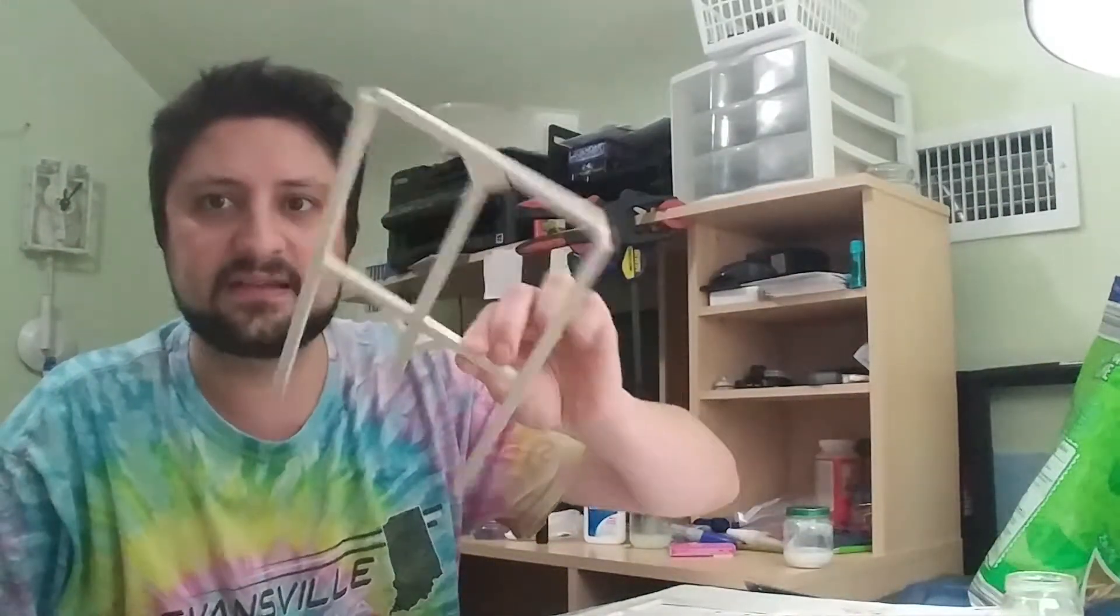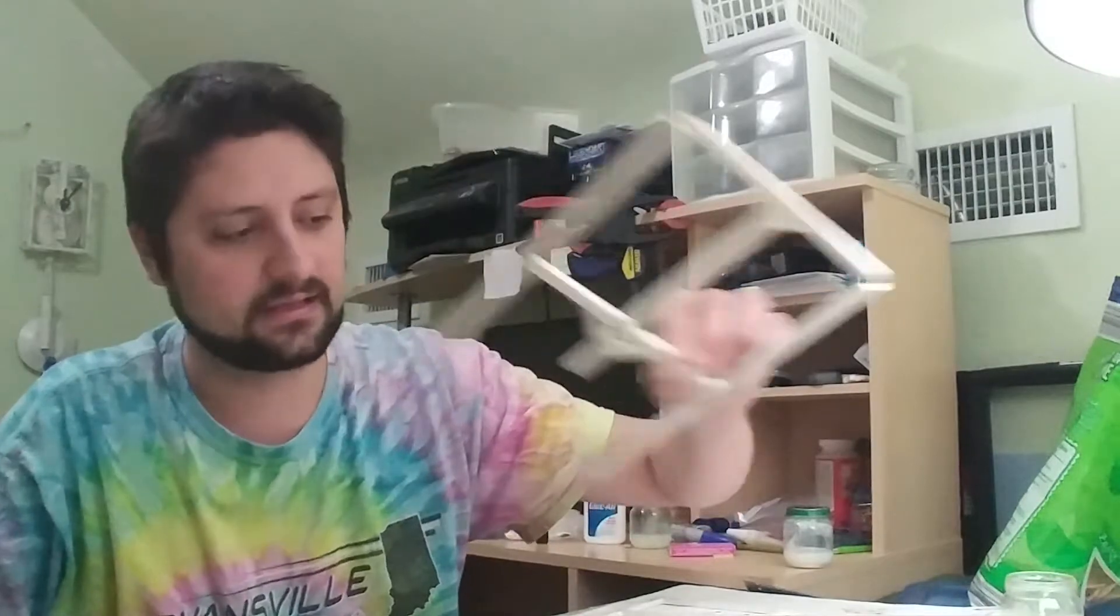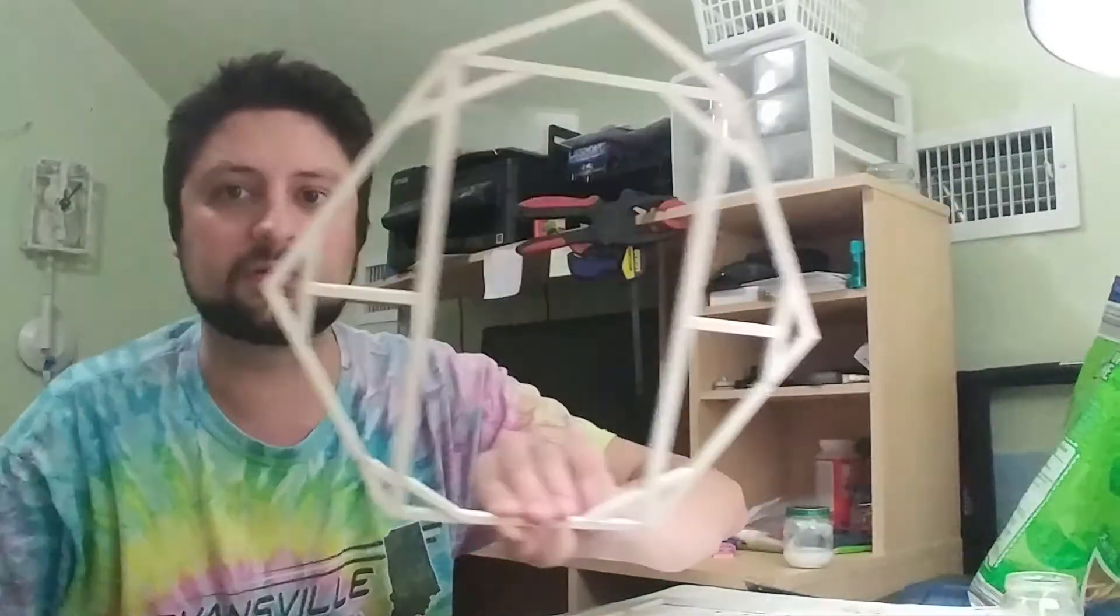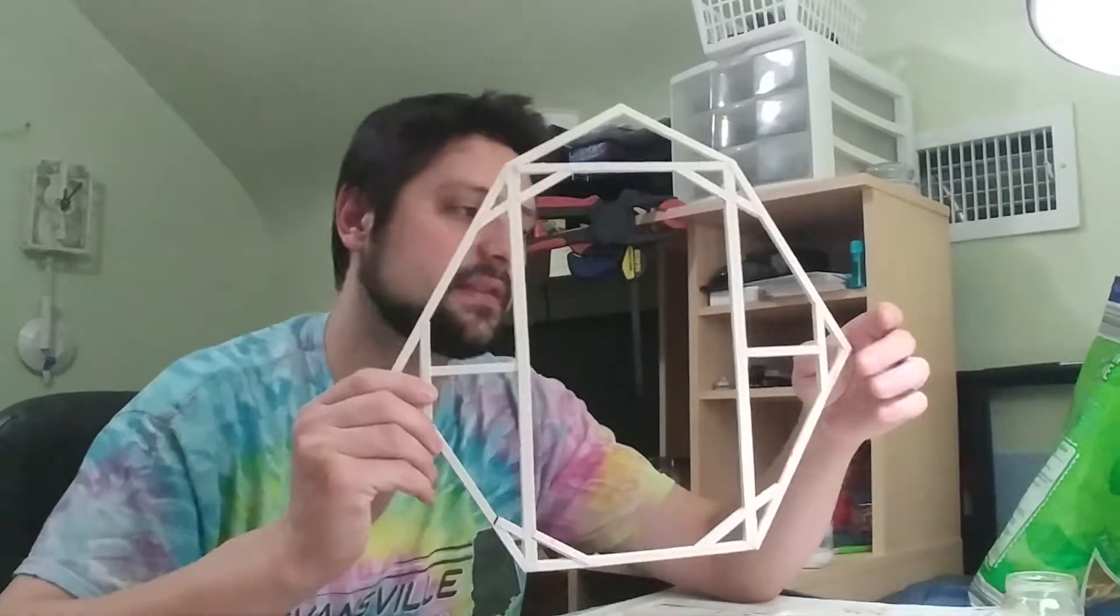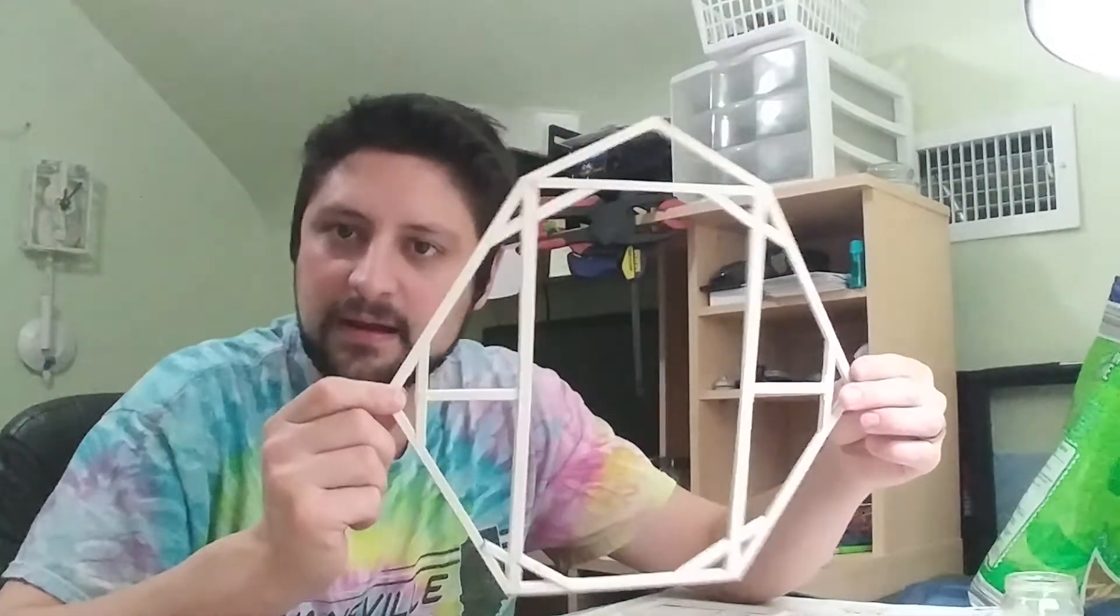The first six steps of the instructions are about assembling these pieces of the frame. You cut these tubes at certain angles and glue them together with folds over certain parts, and you make these cardboard tube frames.